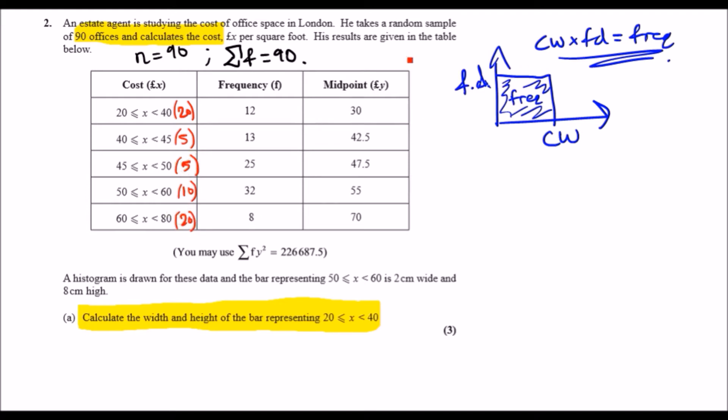So now we just make an extra column. We call it frequency density. Now, using this formula, let's calculate the frequency density of all of them. Why not? So we can say, frequency density equals, using the formula, it would just be frequency over class width.